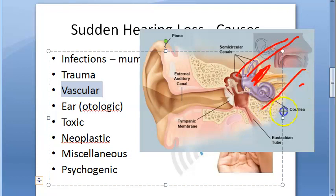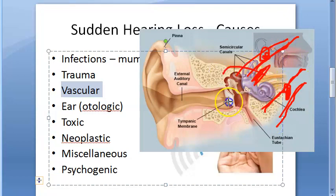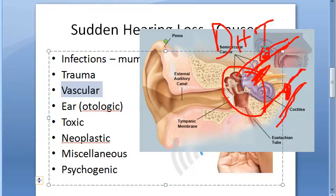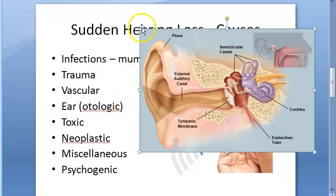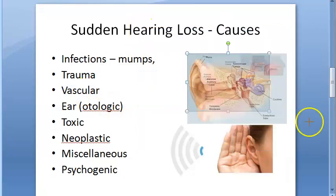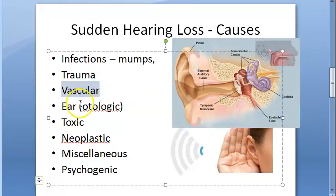Vascular causes include hemorrhage, thrombosis, or embolism of the labyrinthine or cochlear artery, and vasospasm of these arteries, all leading to reduced blood flow. These can be associated with conditions like diabetes, hypertension, polycythemia, macroglobulinemia, and sickle cell trait — where sickle-shaped RBCs cause vascular disturbances and impaired blood flow.